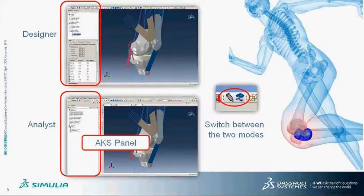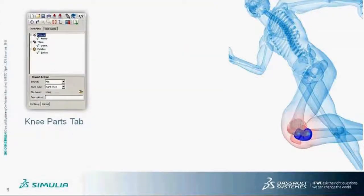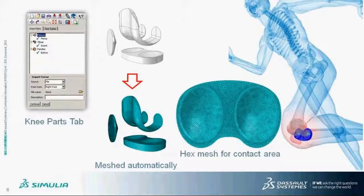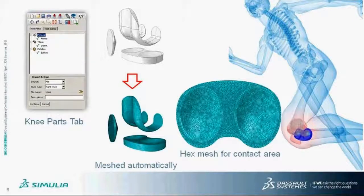For both modes, the Abacus Knee Stimulator functionalities are collected in the AKS panel on the left of the interface. Within the AKS panel there are two tabs. First is the Knee Parts tab, where the knee implant components are imported into the Abacus Knee Stimulator. These components are matched automatically upon import.